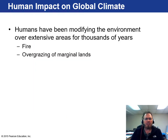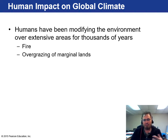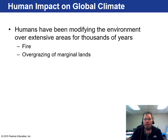Let's turn our attention now to humans' impact on global climate. Humans have been modifying the environment for thousands of years — with fires to burn things or clear land for farms, through overgrazing, and many other actions. Humans have made an impact since day one on our Earth, and now we're starting to understand the implications of those actions.